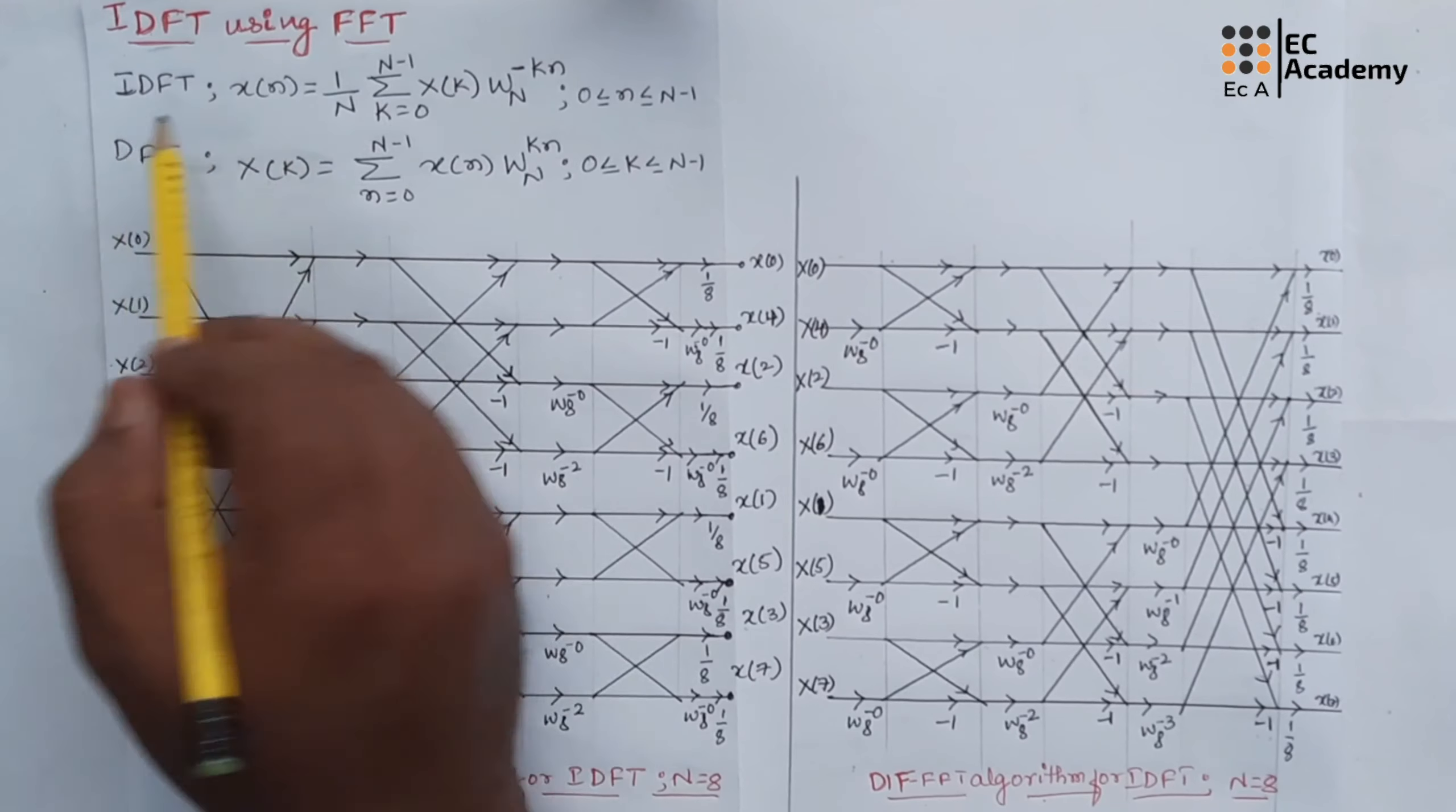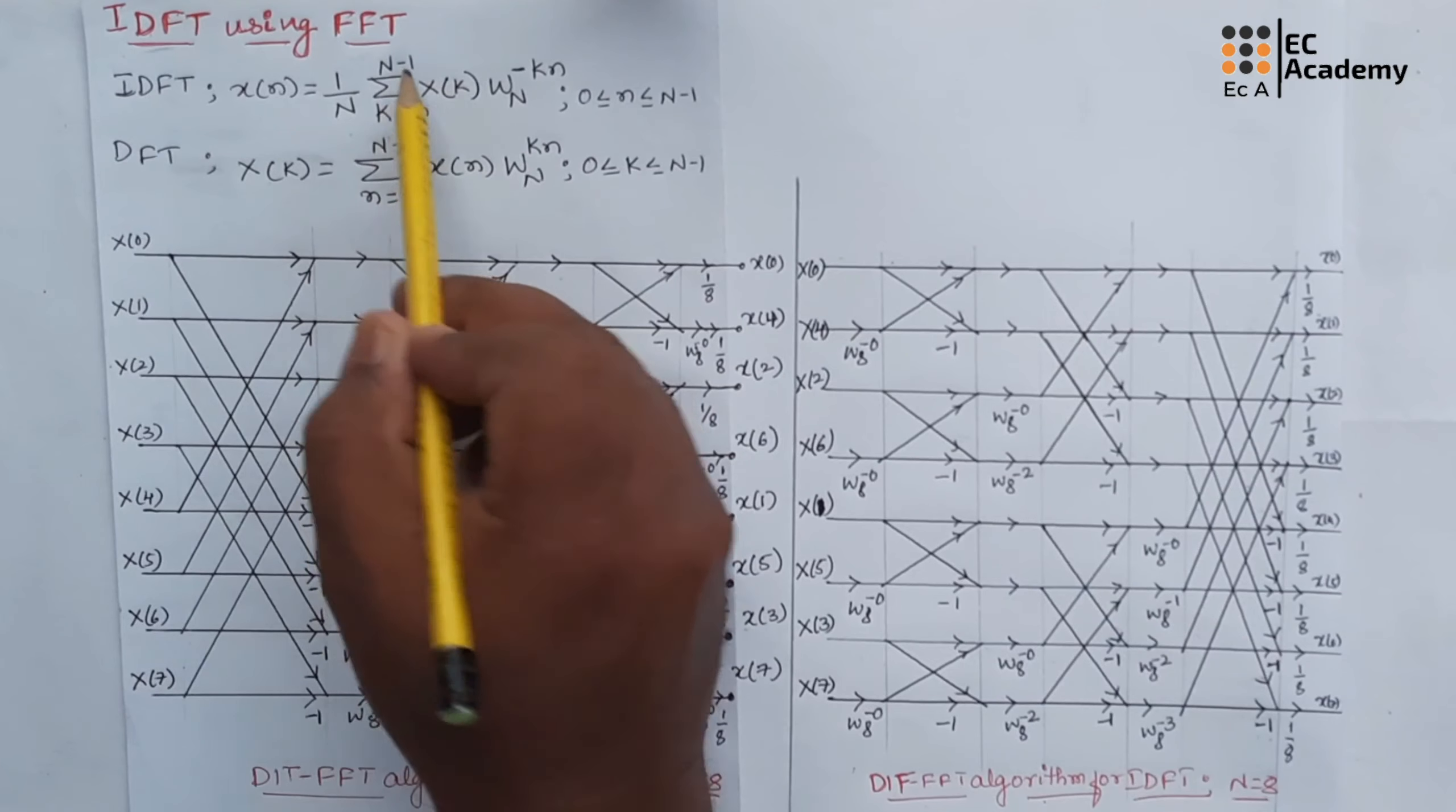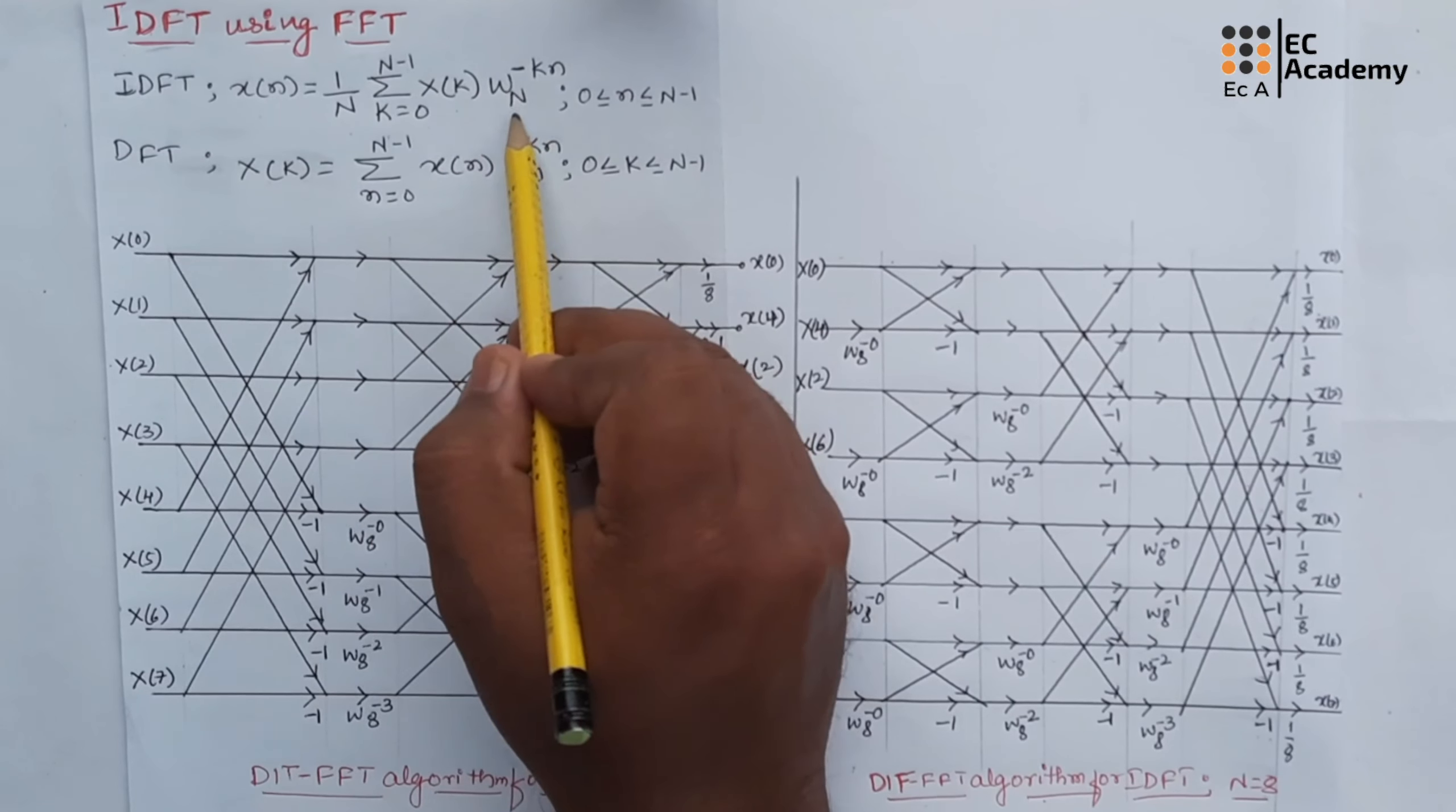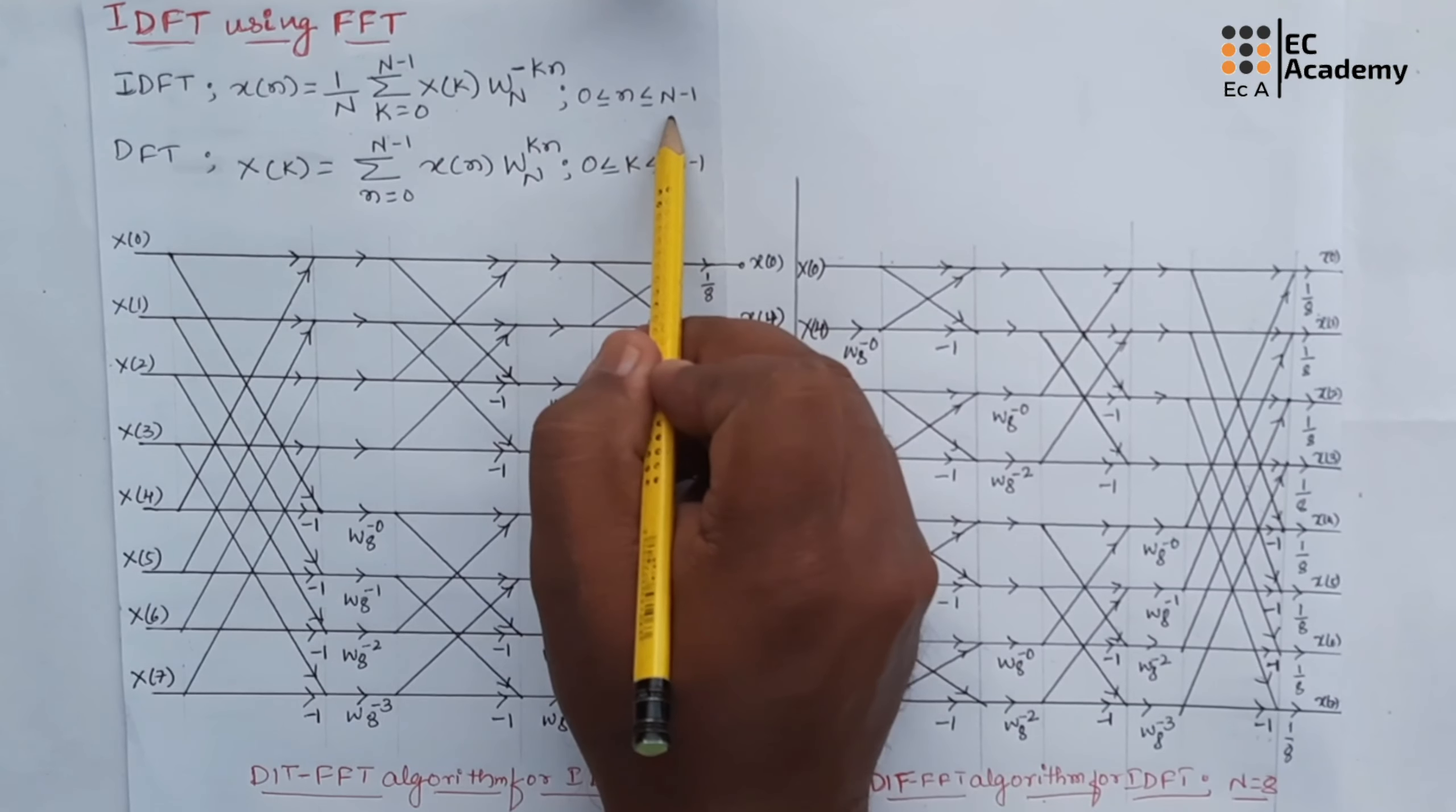We know that IDFT can be given as x(n) = (1/N) × Σ(k=0 to N-1) x(k)·W_N^(-kn), where n value is ranging between 0 to N-1.